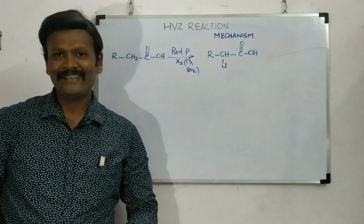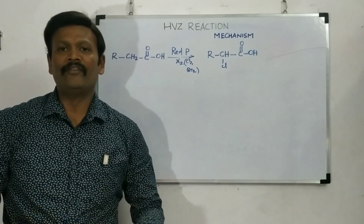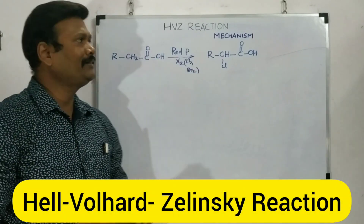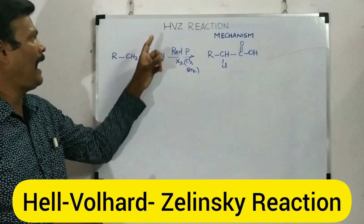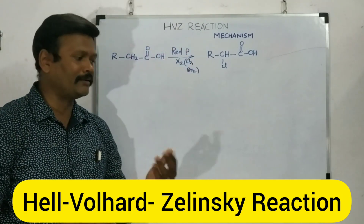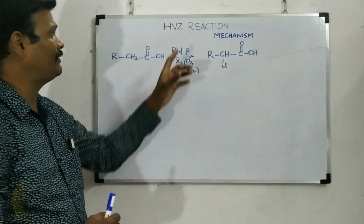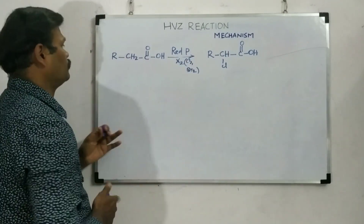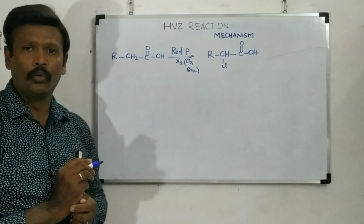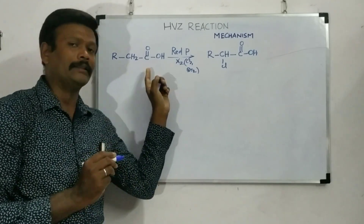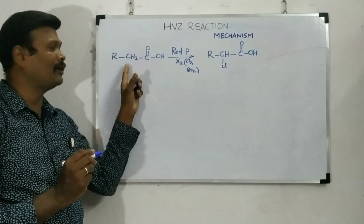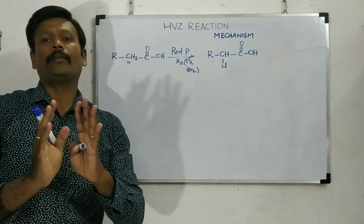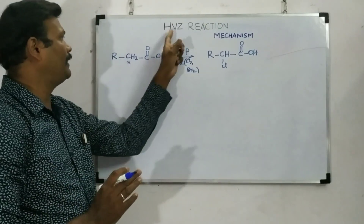Welcome to our channel, dear students. Today we are going to talk about a very important mechanism: the HVZ reaction — the Hell-Volhard-Zelinsky reaction. Here we have a carboxylic acid with an alpha-hydrogen. This carboxylic acid containing an alpha-hydrogen is the only type involved in this kind of HVZ reaction.